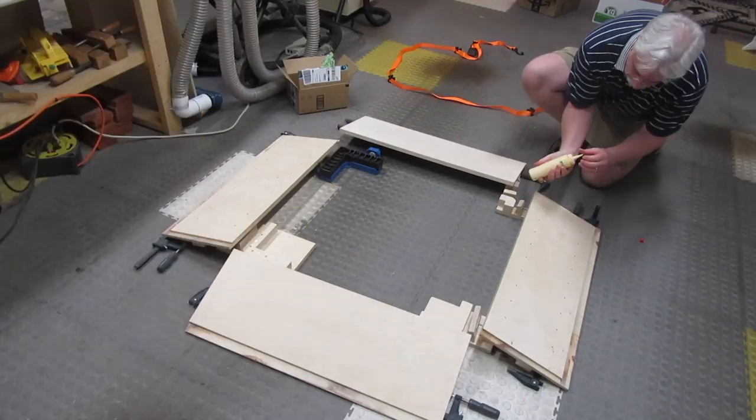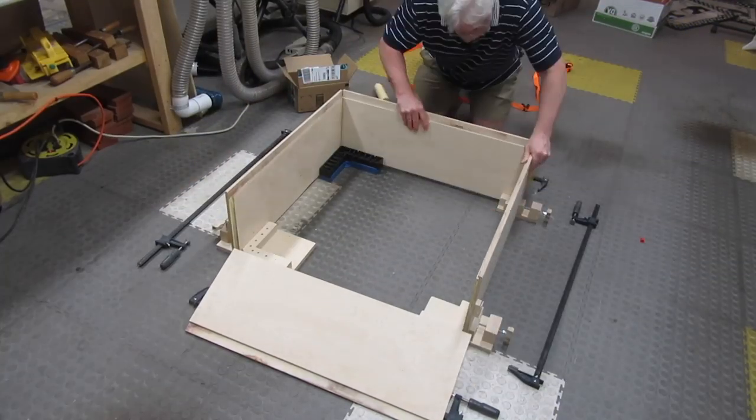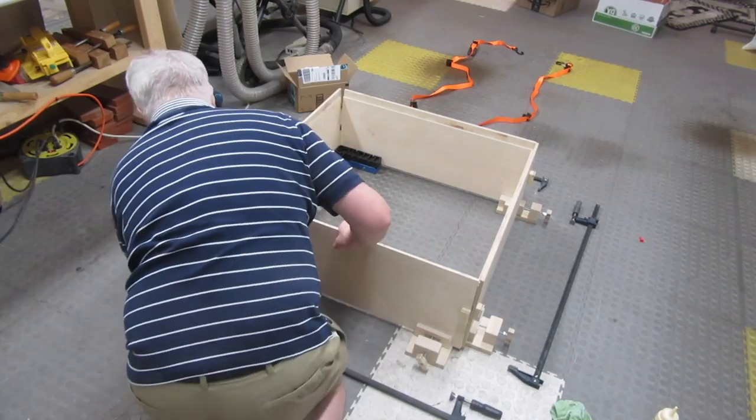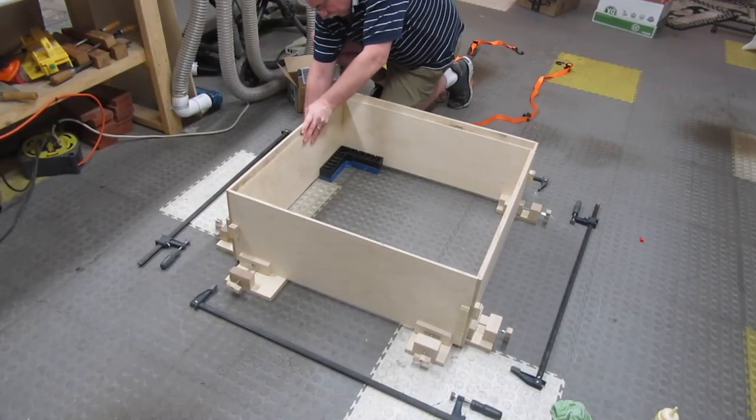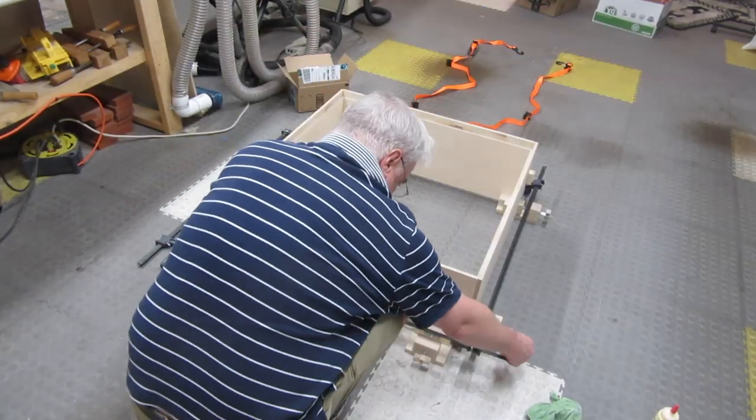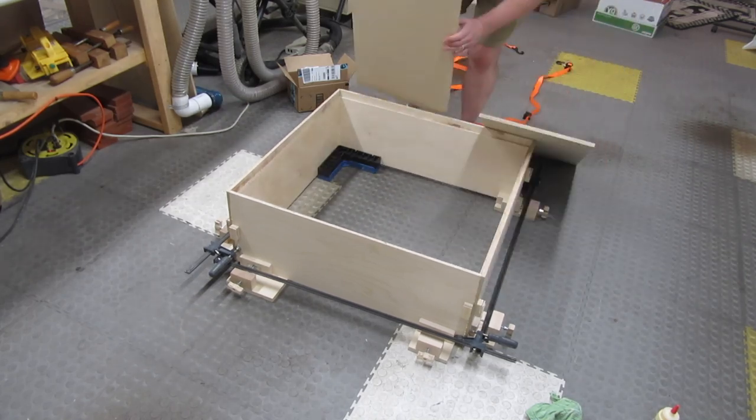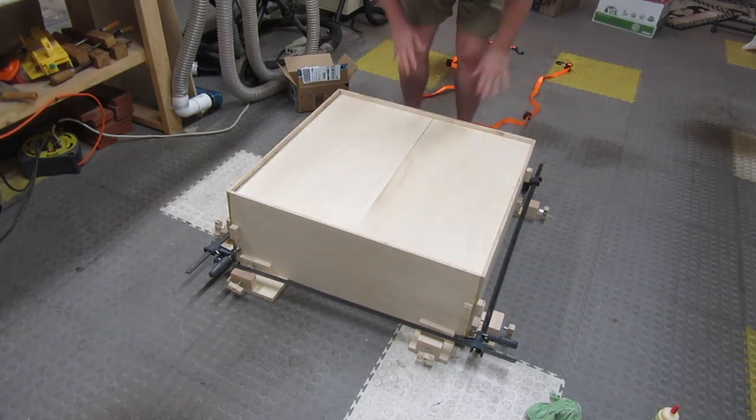So I put glue on everything, and repositioned the pieces in the corner clamps. See how great these things are? I put the F-clamps on the bottom. I put the back on, just to help make sure everything's square.